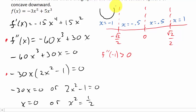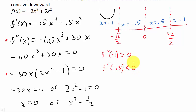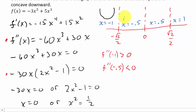Now we do negative 0.5: f double prime of negative 0.5. Plugging that in gives negative 7.5. It's negative, so f double prime is less than zero, which means the graph is concave downward on that interval.